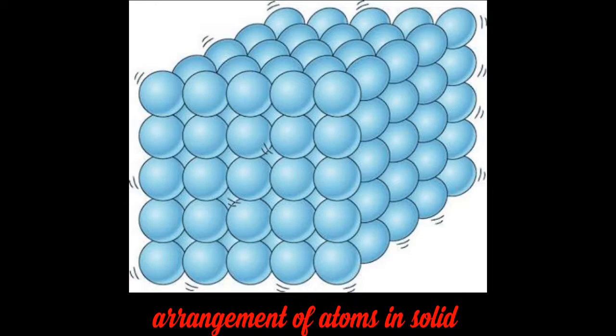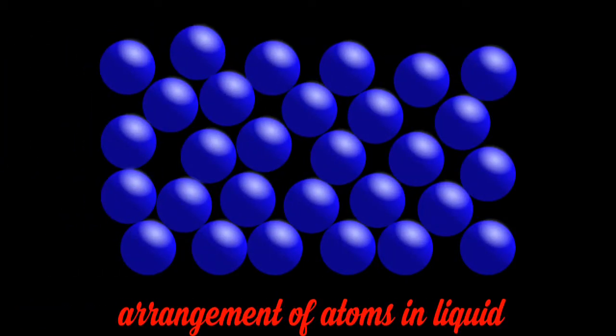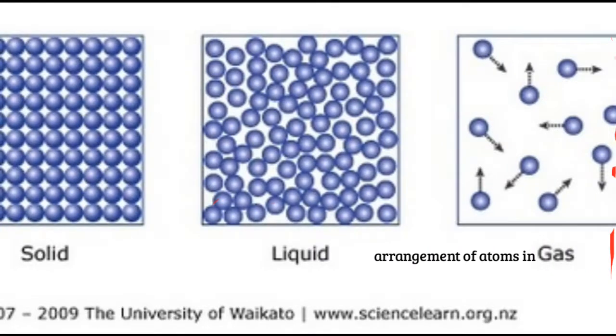You are seeing the picture of arrangement of atoms in solid state, arrangement of atoms in liquid state. The third picture represents the arrangement of atoms in gaseous state. Compared with the first and second, the gap between the atoms is more.